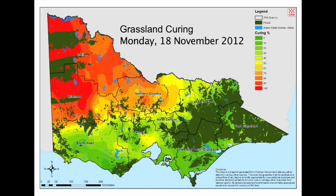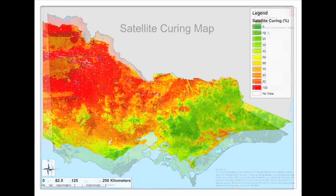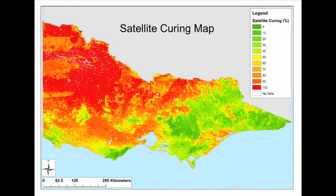Hi, my name is Danielle Martin and I am the Satellite Remote Sensing Analyst for the Grassland Curing Project. Grassland curing observations are collected by human observers and are also collected by satellite. Here is a satellite image taken when the grassland was partly cured.